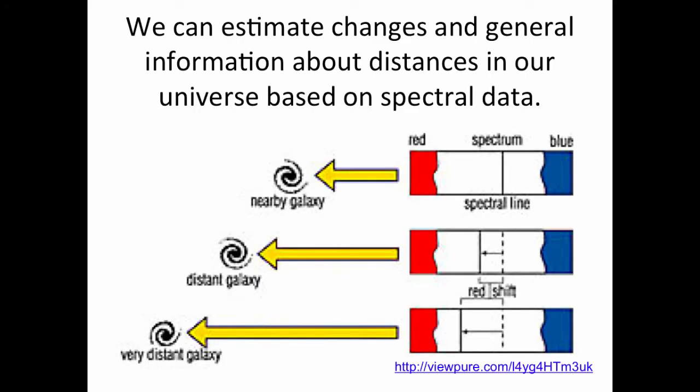We can estimate changes and general information about distances in our universe based on spectral data. When you look at a nearby galaxy, it tends to be its regular color because the line is right in the spectrum. As we move out and look at a distant galaxy, the spectral starts to shift towards the red direction. The very most distant galaxies shift even farther towards the red.